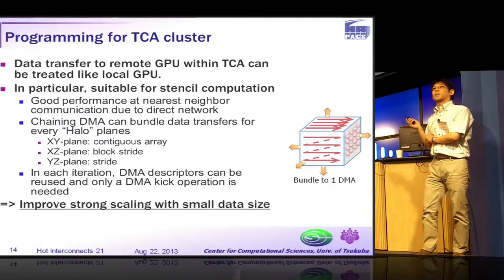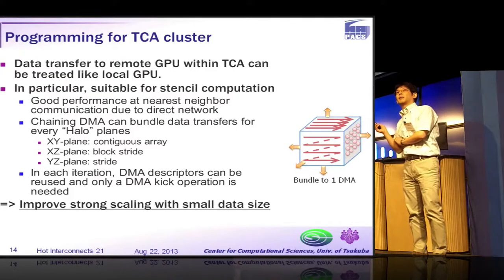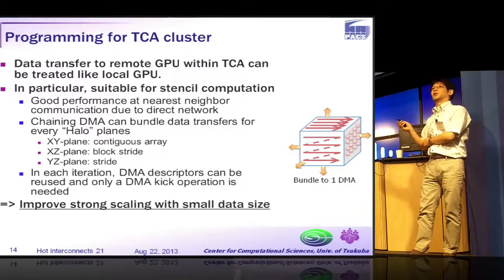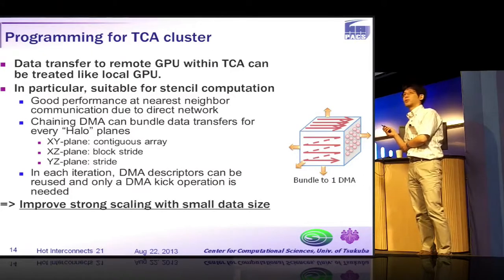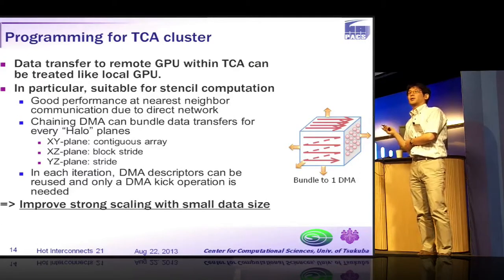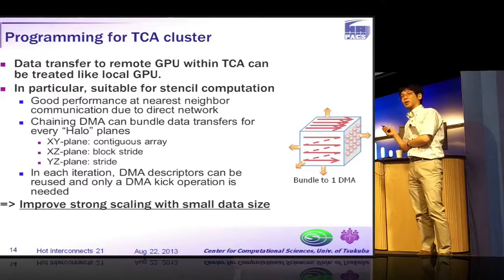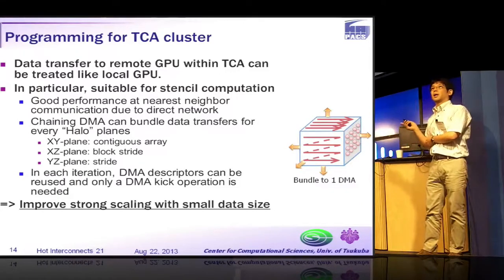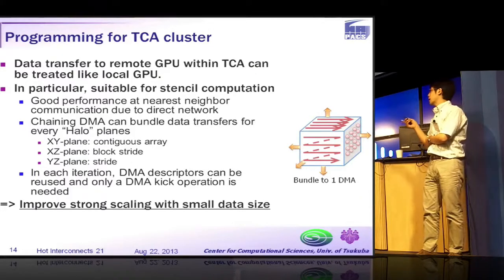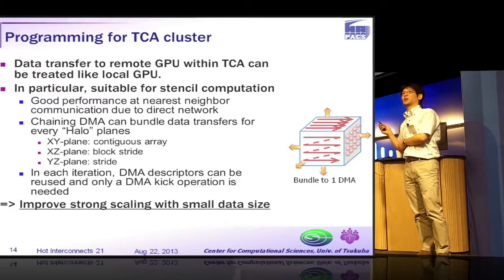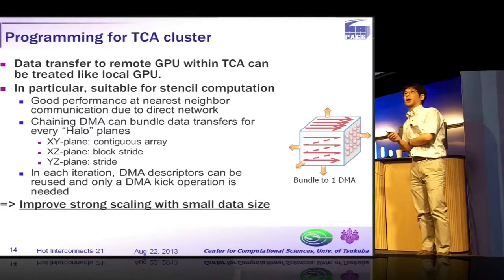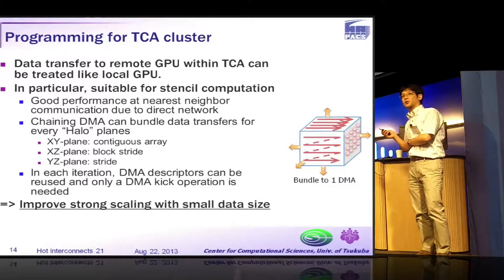This is the programming model for the TCA cluster. We assume that data transfer to a remote GPU within TCA can be treated like a local GPU, so a programmer can easily write a multi-GPU program over the nodes. This figure shows a typical communication pattern in stencil computation for the 3D case. Each plane has a different and complicated communication pattern, but PH2 can issue only one DMA operation. By using the PH2 chip, we can improve strong scaling with small data sizes.